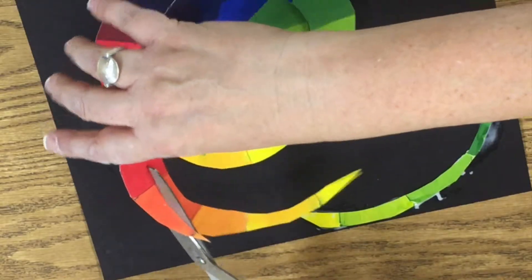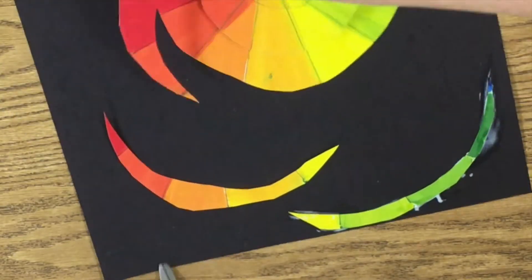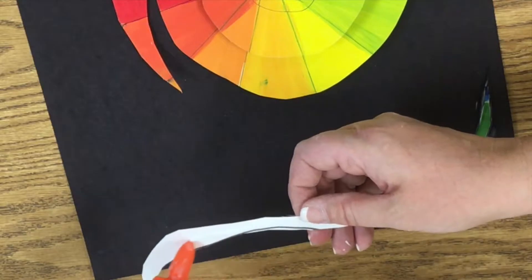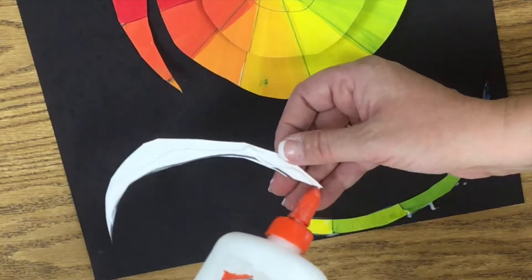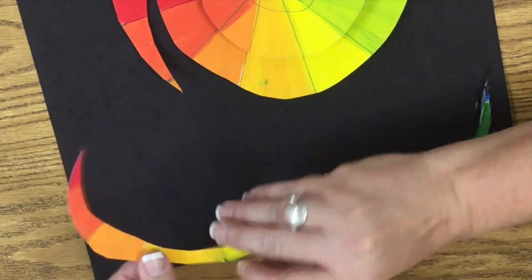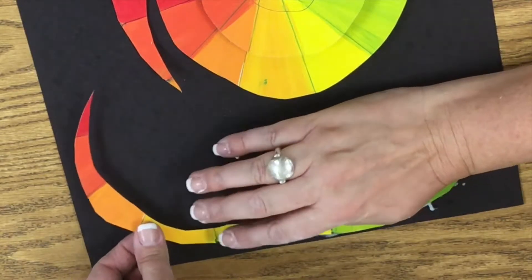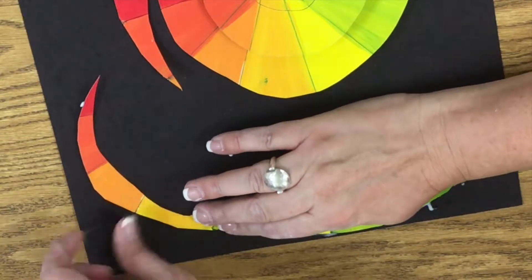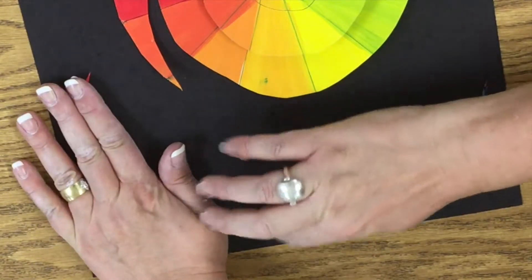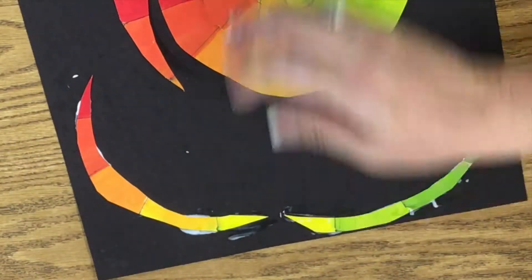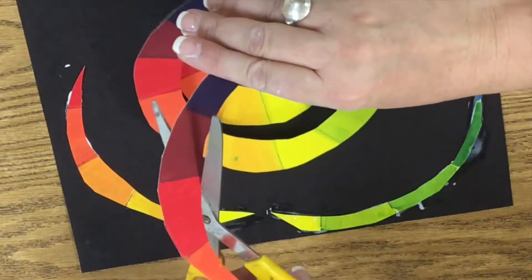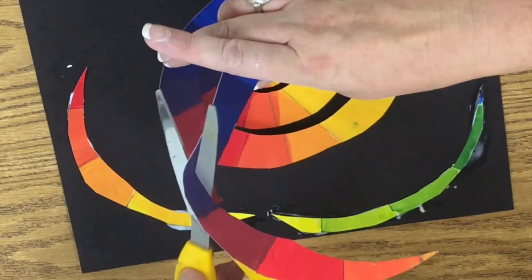For the second piece, we're going to put the glue on the end of it and hook it on. It's going to come out here, and we're going to cut our next piece.